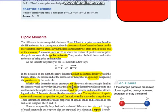Polarity helps determine many properties we observe at the macroscopic level in the laboratory and everyday life. Polar molecules tend to align themselves with respect to one another, with the negative end of one molecule and the positive end of another attracting each other. Polar molecules are likewise attracted to ions.